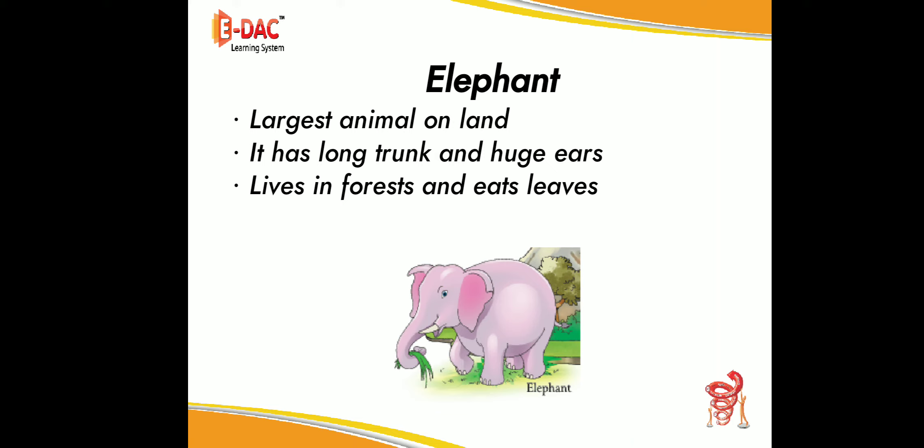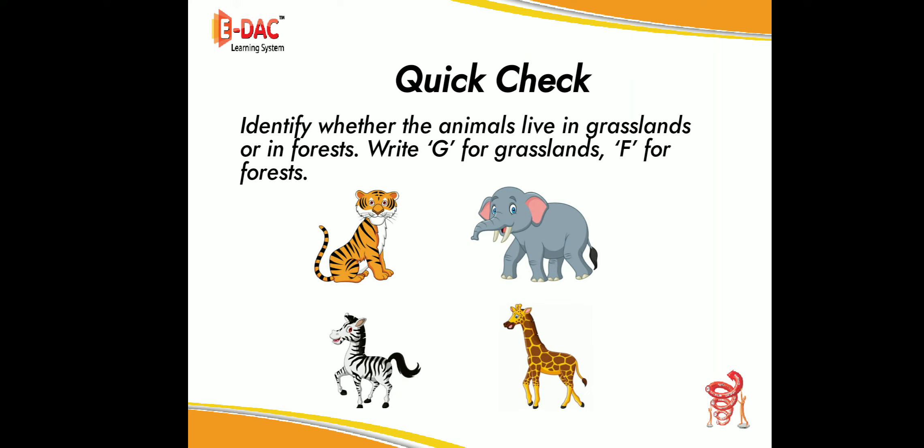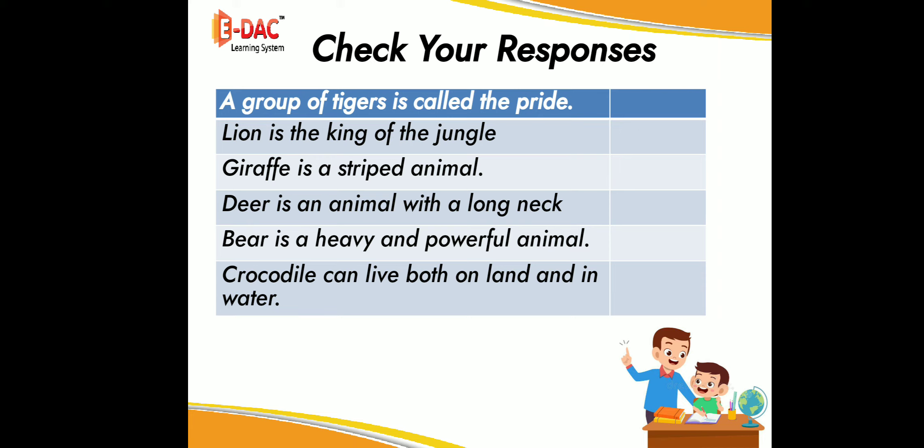Now let us quickly check our understanding of the concept. Identify whether the animal lives in grassland or in forest. Write G for grassland, F for forest.